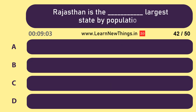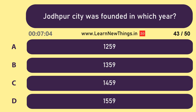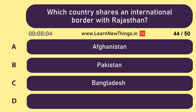Rajasthan is the dash largest state by population. 7th. Jodhpur city was founded in which year? 1459. Which country shares an international border with Rajasthan? Pakistan.